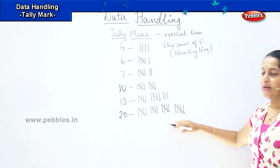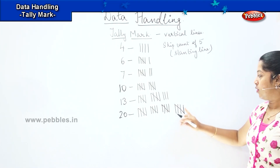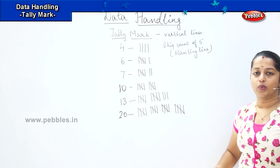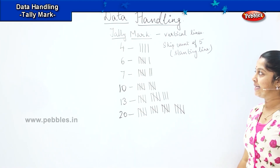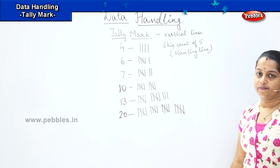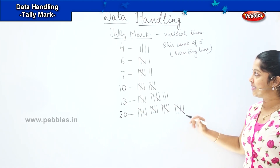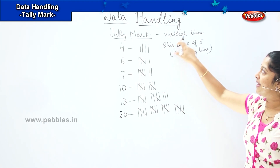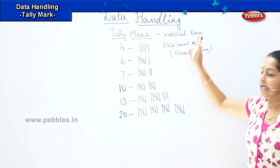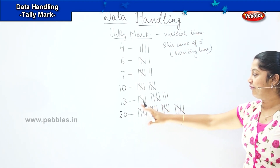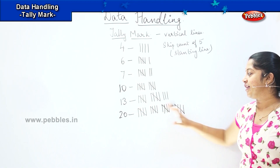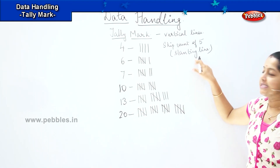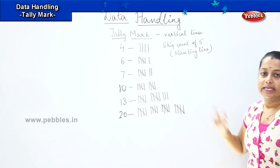So how many slanting lines did we have in all? 1, 2, 3 and 4. We had 4 slanting lines. Tally marks are usually denoted by a vertical line and the 5th line of each tally mark will be denoted by a slanting line.